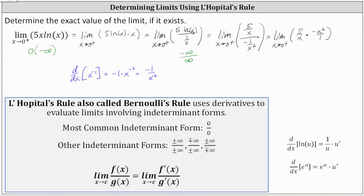We have a common factor of x between numerator and denominator: x simplifies to 1 and x squared simplifies to x. This gives us the limit as x approaches zero from the right of negative 5x divided by 1, or negative 5x. As x approaches zero from the right, negative 5x approaches zero. The exact value of the limit is zero.